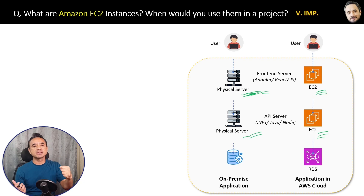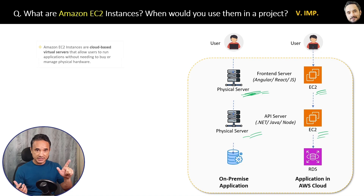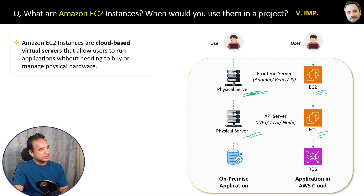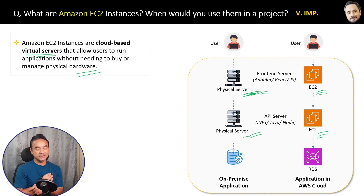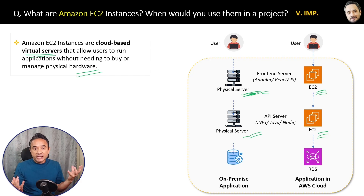EC2 instances can also be used for running background processes and other purposes — it's just like a CPU. Here is the simple and easy-to-remember definition: EC2 instances are cloud-based virtual servers that allow you to run applications without needing to buy or manage physical hardware. Now, EC2 is not the best or simplest option for hosting applications — I will share the better option in the next question.